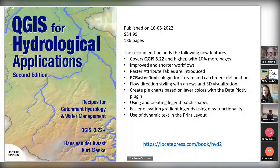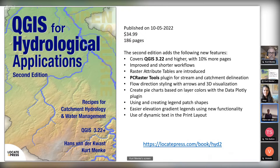For example, we have raster attribute tables introduced, which will probably in the near future become even a core feature, but now it's a normal plugin — not even an experimental plugin — so you can install it, and the book describes how to use that to add attributes to your raster maps.